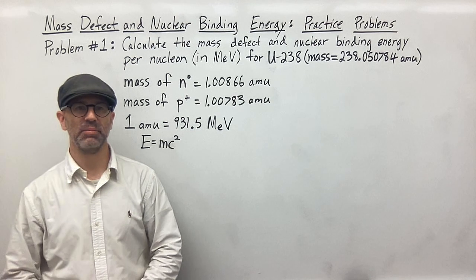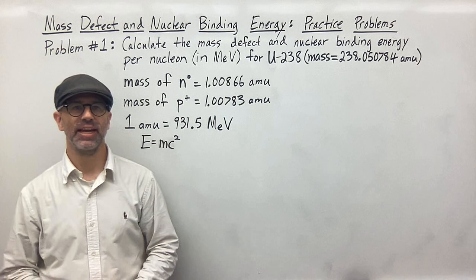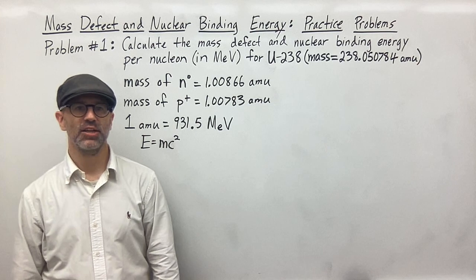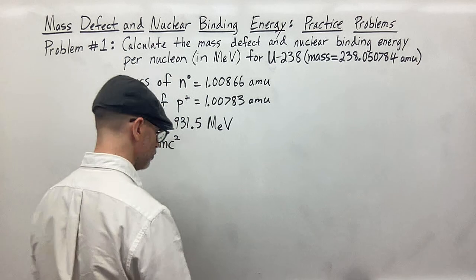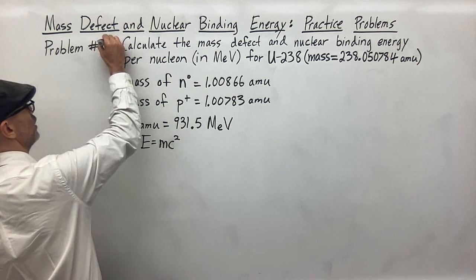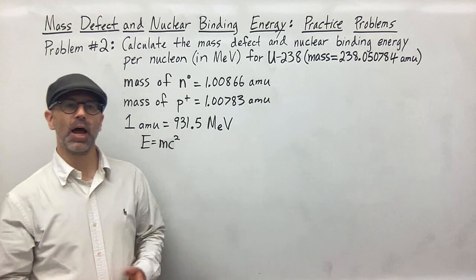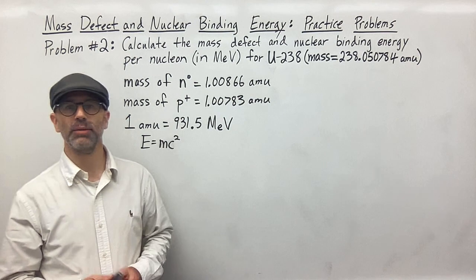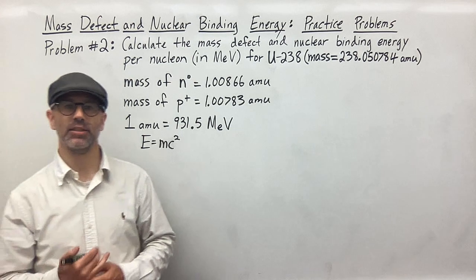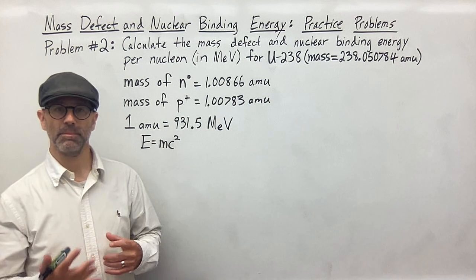Hello everyone and welcome back. My name is Mr. Cobalt and in this video I'm going to show you how to find the mass defect and the nuclear binding energy of an isotope. This is actually problem number two, not problem one. In this problem we're given the uranium-238 isotope and we're asked to find the mass defect and then find the nuclear binding energy per nucleon in mega electron volts.